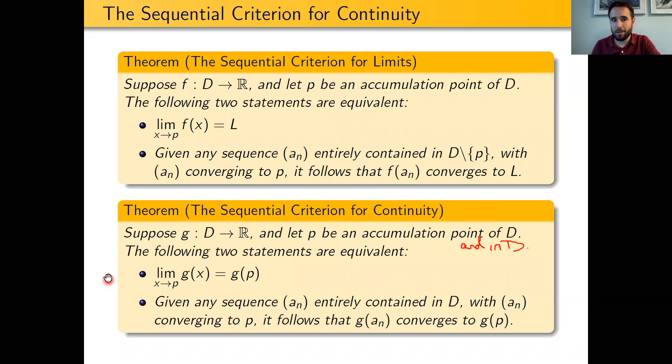First, G is continuous at P, aka the limit as X goes to P of G of X is actually equal to G of P.